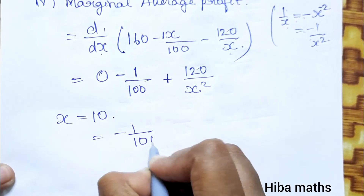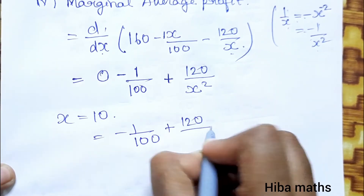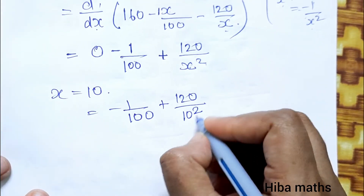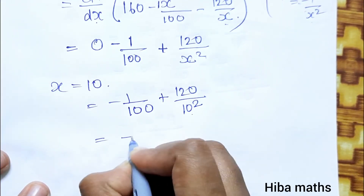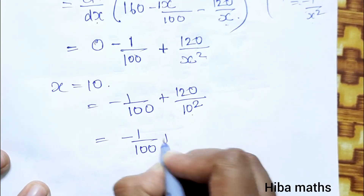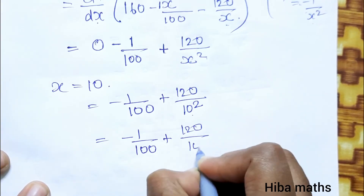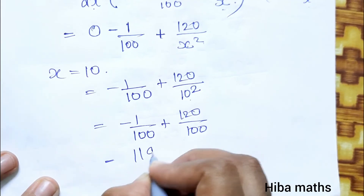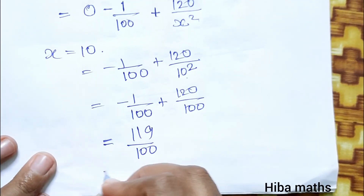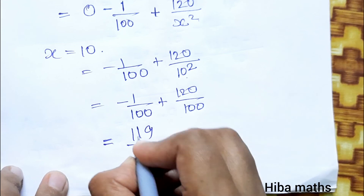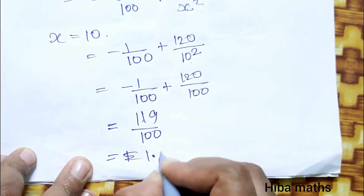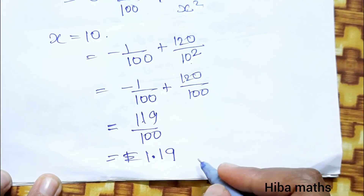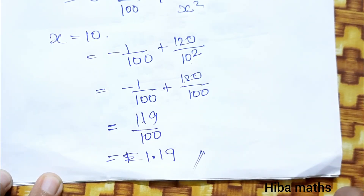At x = 10: marginal average profit = -1/100 + 120/100 = (-1 + 120)/100 = 119/100 = 1.19. This is the marginal average profit at x = 10. Thank you so much for watching.